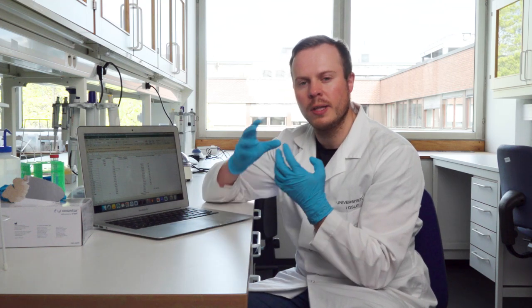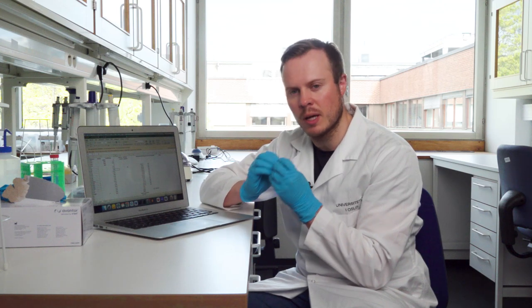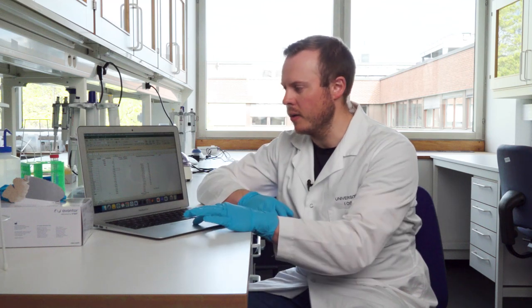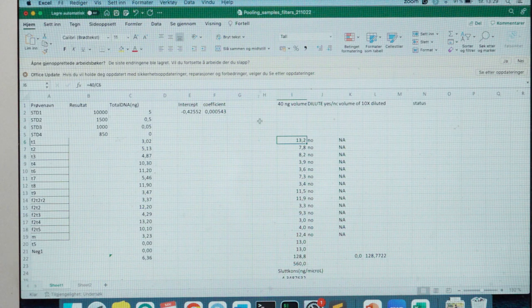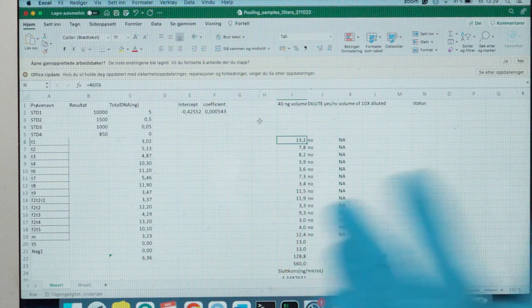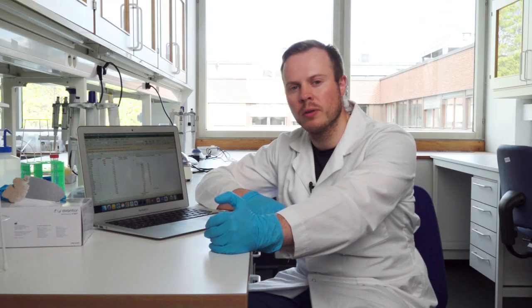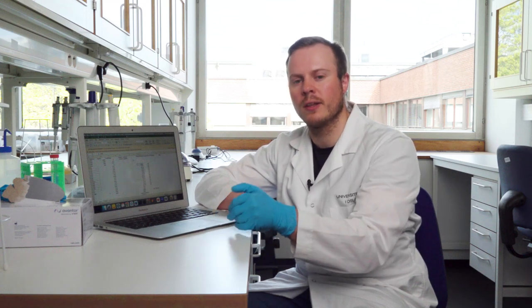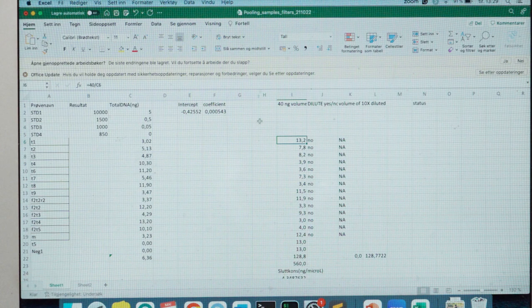So then for the pooling, as I have stated earlier, we need to get the same amount of DNA from each of the samples, so they are in equimolar concentrations. So here we use a simple calculation that is already in these forms to find out how much volume do I need to take out from sample one to get out 40 nanograms of DNA.